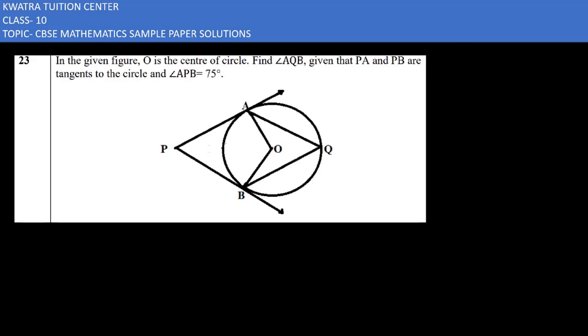Angle APB is 75 degrees. We have to find angle AQB, which is the opposite angle to it. Now how can you find this? You have to use some theorems.